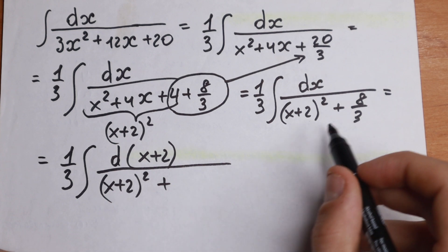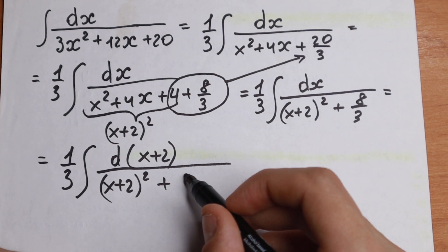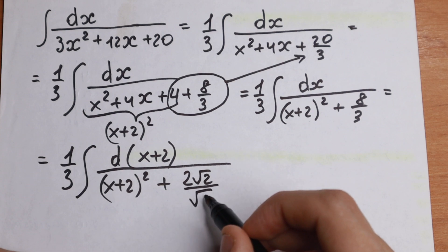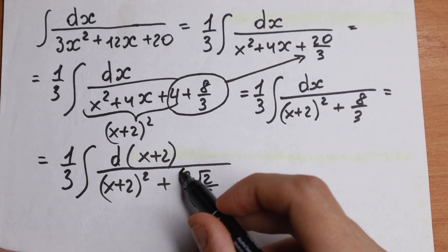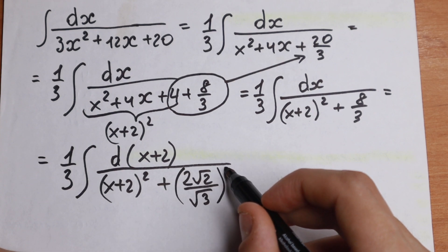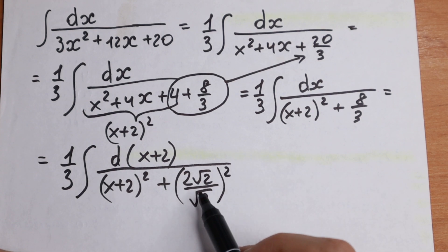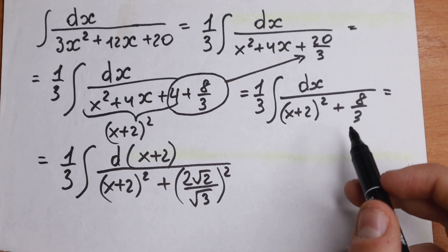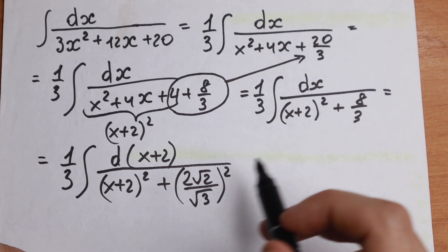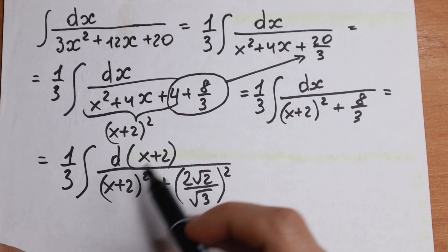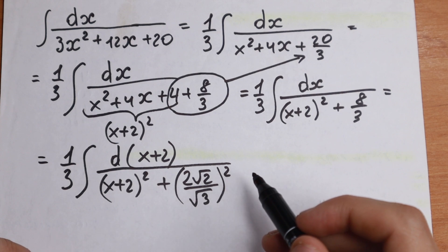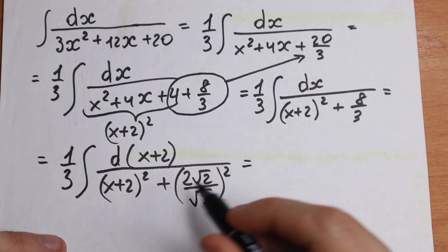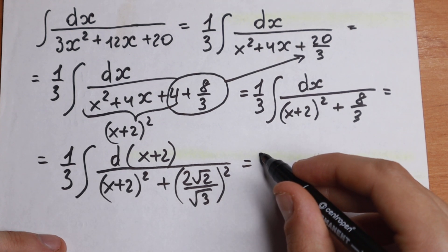We also need to write 8 thirds in the form of a square. We can write it as 2 square root of 2, divided by square root of 3, all squared. If you expand this, you get the same 8 thirds. All of these steps are designed to match the standard arctangent integral formula from higher mathematics.